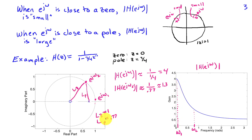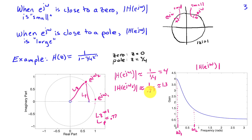Changing the frequency a bit and moving further around the unit circle — if I pick a frequency ω₂ out here, L_z, the distance to the zero, stays at 1, but L_p, the distance to the pole, has gotten quite a bit bigger, say about 0.77. In that case, the magnitude of H(e^{jω₂}) is approximately 1 over 0.77, which is approximately 1.3. And if we pick ω₂ in that vicinity, we see that we're indeed getting about that value.